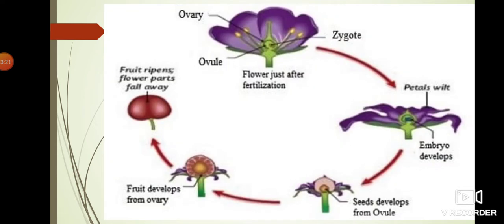Now look at this picture. It shows a cycle of producing a flower from a seed - seed and fruit. In the first picture, fertilization and pollination have happened. The flower has an ovary and inside the ovary there is an ovule. That fertilized egg is called a zygote. After pollination, the petals start drying. You may have noticed at home - after some days of blooming, all those petals fall away, and then the plant starts giving fruit.